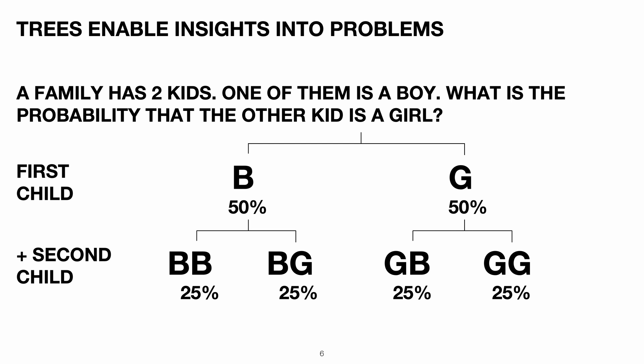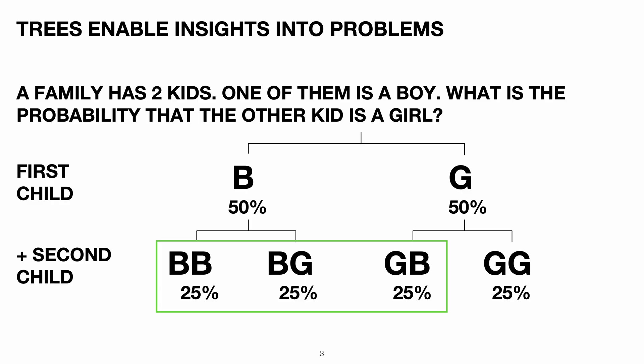As a result, we have four possible cases: a boy and a boy, a boy and a girl, a girl and a boy, and a girl and a girl. The probability of each case is 25%. According to the problem statement, one of the kids is a boy, so the two-girls scenario did not happen — there are three cases left, in two of which one child is a girl. This means that the desired probability that the other child in the family is a girl is two-thirds, or 67%.